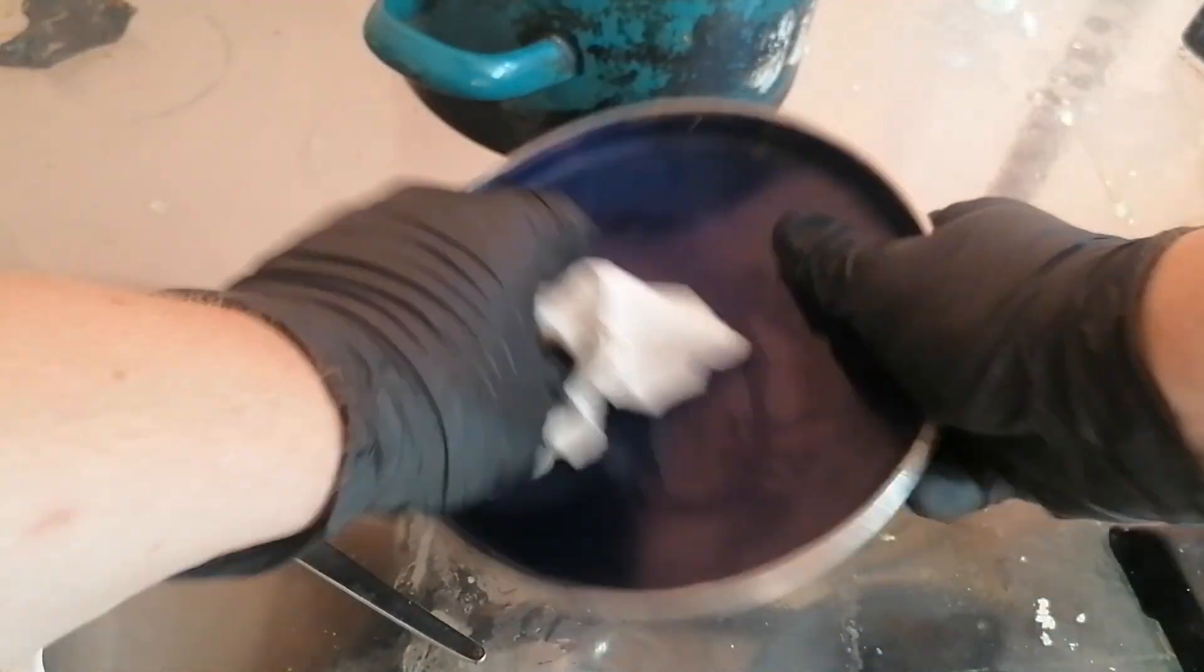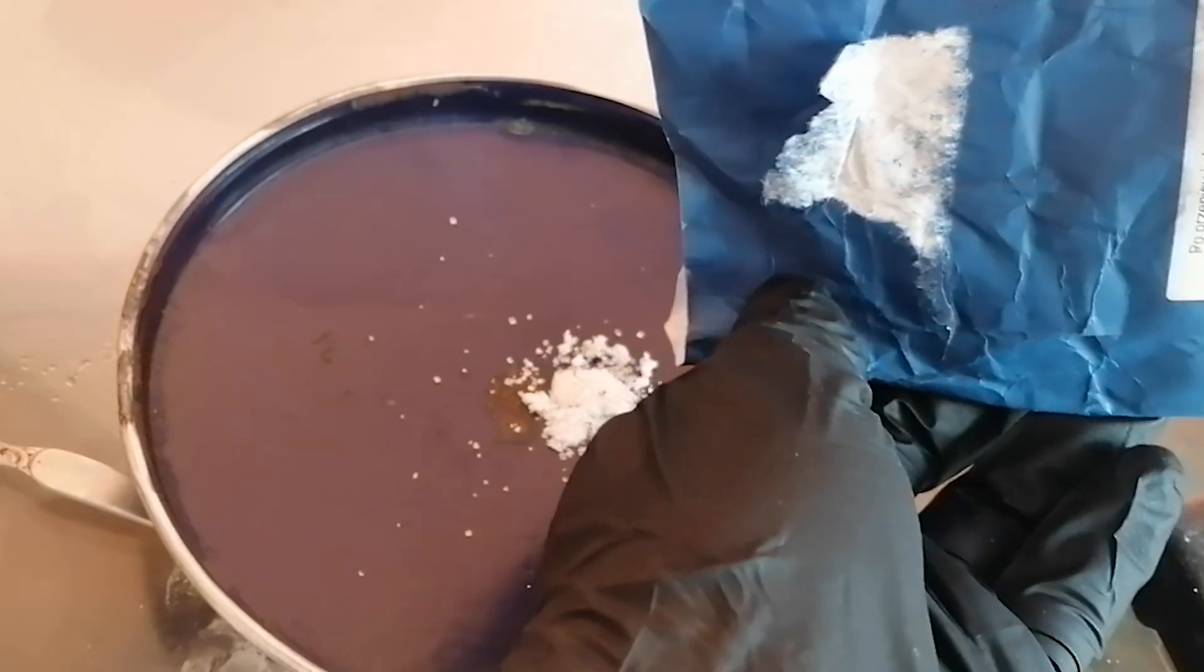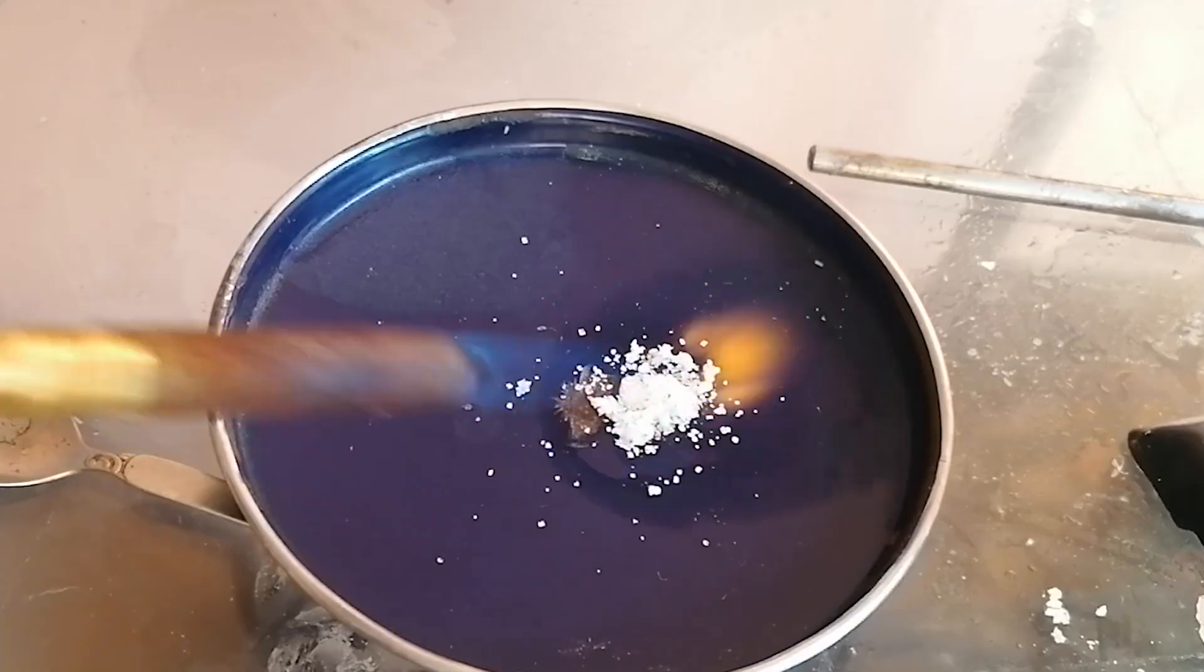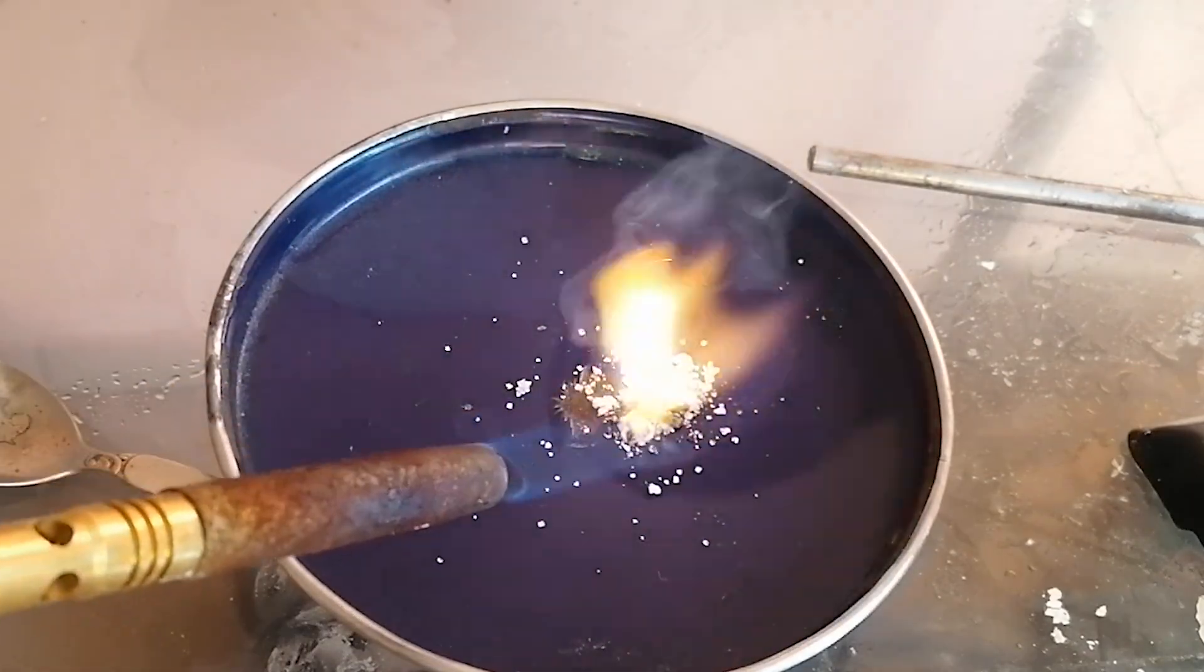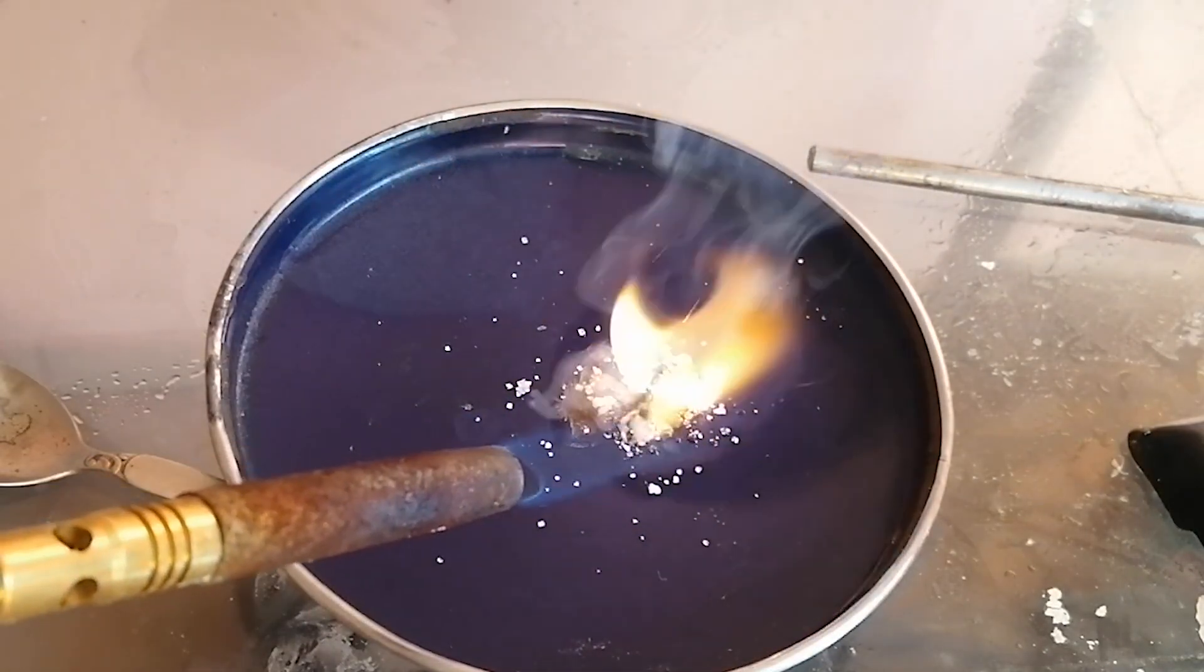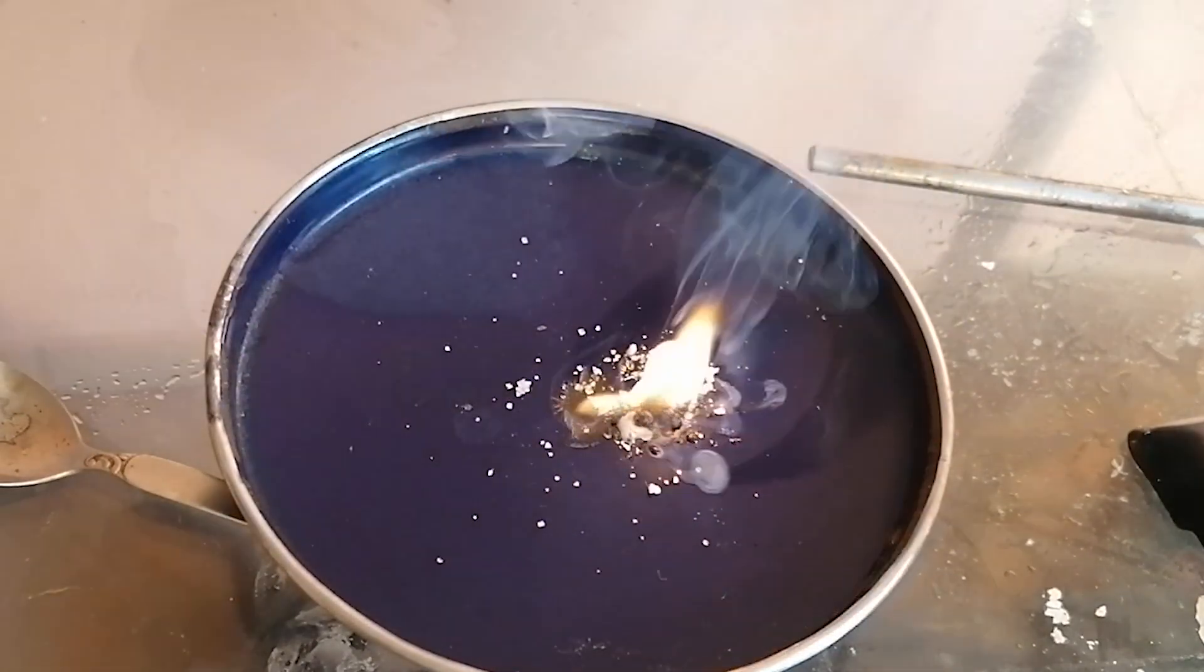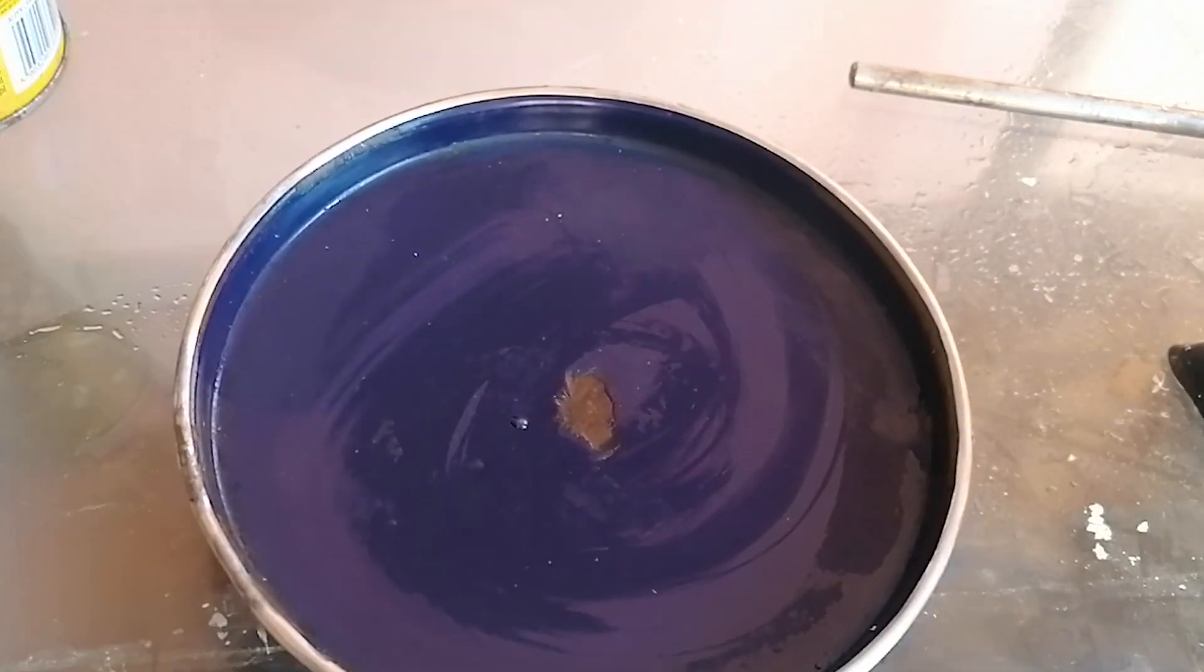Now that the chlorate is powderized, let's test it by adding it to some sugar. You can see here it's pretty underwhelming, but that's mostly because sugar here is in the form of really small sugar crystals which just don't burn really well. Now let's test it with some real stuff.